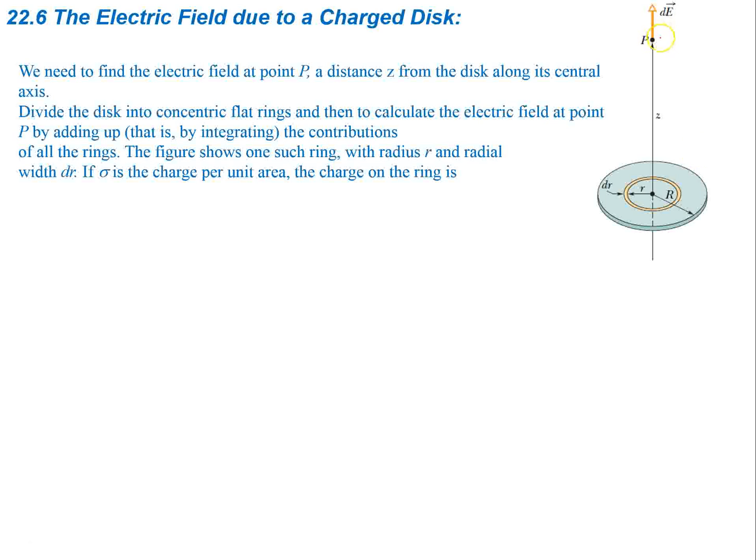We're going to represent the differential element dE as the electric field due to a small ring of charge. The ring of charge has the dimensions of dr which is going to be the width, the distance to the ring is going to be our variable r, and then the full length of the disk is going to be capital R.